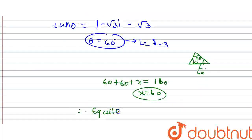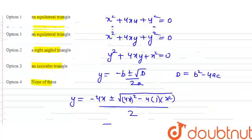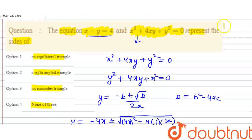So the answer is equilateral triangle, which is option number 1. This is because when we applied the tan formula for both pairs of lines, we got 60 degrees each. Since all three angles are 60 degrees by the angle sum property, the three given lines represent the sides of an equilateral triangle. Thank you friends!